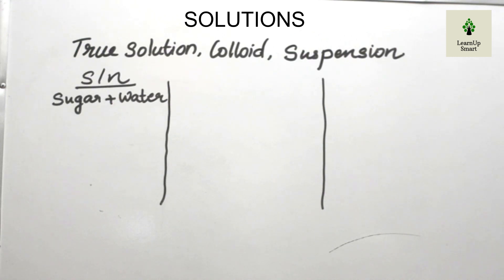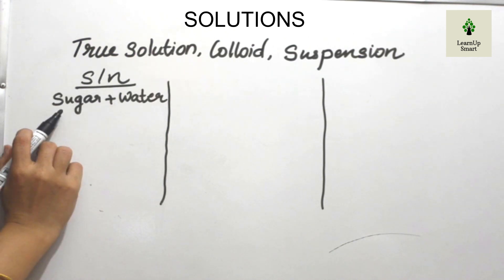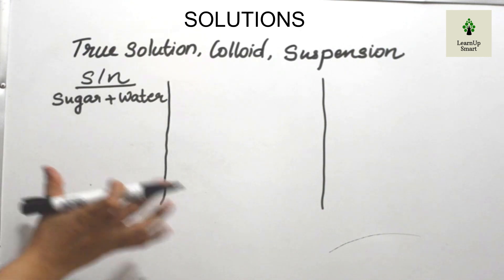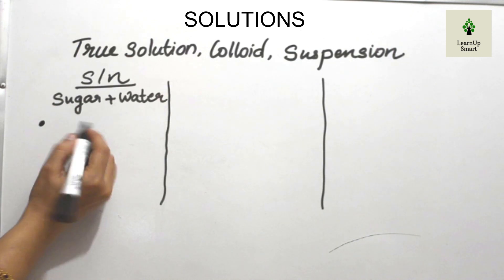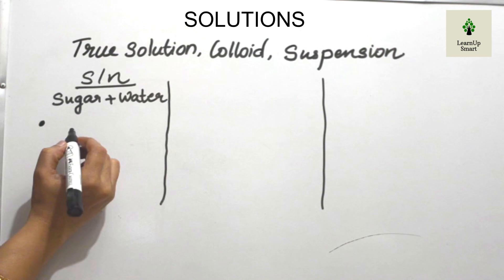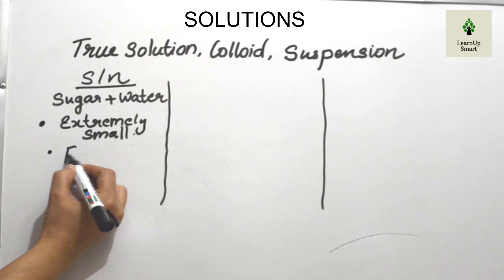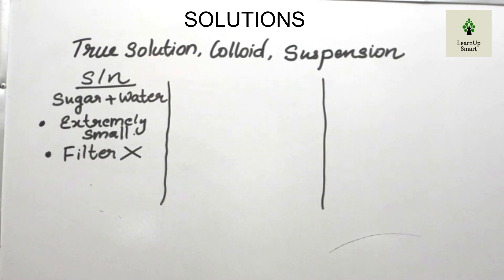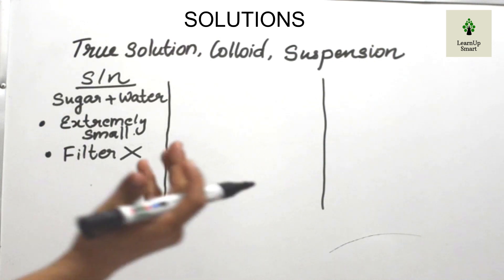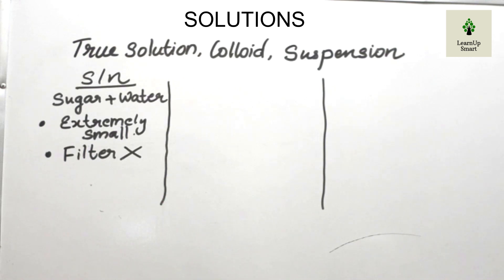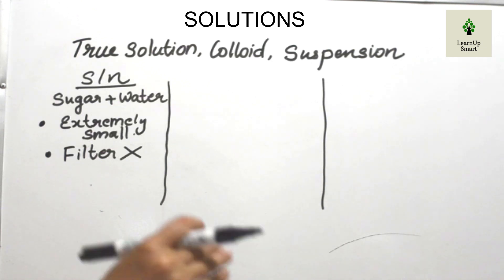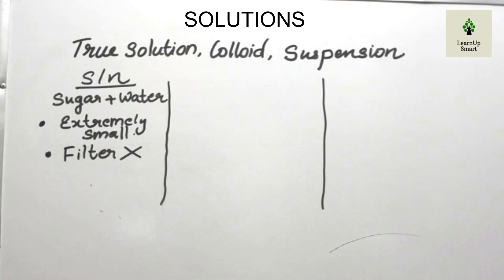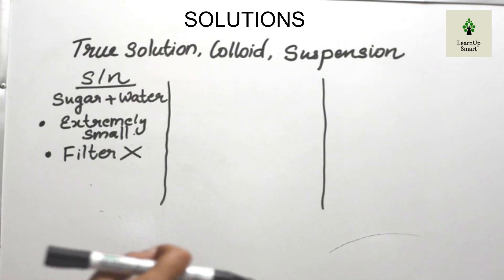In a true solution, the solute is dissolved as molecules or ions. The particle size is extremely small. Because of this, the particles cannot be filtered — it cannot be filtered using a filter paper. For example, sugar dissolved in water forms a true solution — the sugar particles pass through a filter.